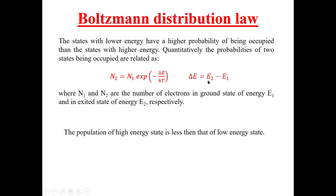Here, ΔE is E2 minus E1, and n2 and n1 are the number of electrons in the excited state and ground state respectively. Since ΔE is positive, the exponential term e^(−ΔE/kT) is always less than 1, so n2 is always less than n1. In other words, the population of the high energy state is always less than that of the lower energy state.